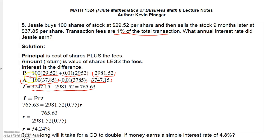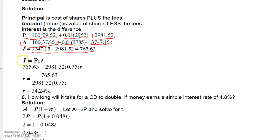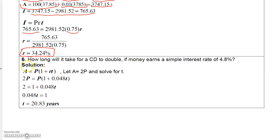So now that you have the interest, you can determine the rate using I equal PRT. Here's your interest. Here's your principal. Here's your time. 9 twelfths of a year is 0.75. So then you divide 765.63 by the product of these two numbers, and you get 0.3424. And when you convert that to percent, it's 34.24%. And then again, just read the last one on your own.